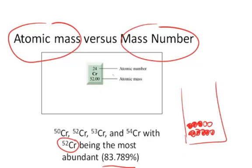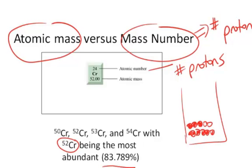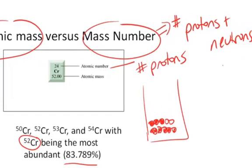And so the atomic mass is the weighted average of the masses of all the isotopes. The atomic number, of course, is just the number of protons, which is the defining characteristic of a particular element. And then the mass number is the sum of the number of protons plus neutrons in the nucleus.